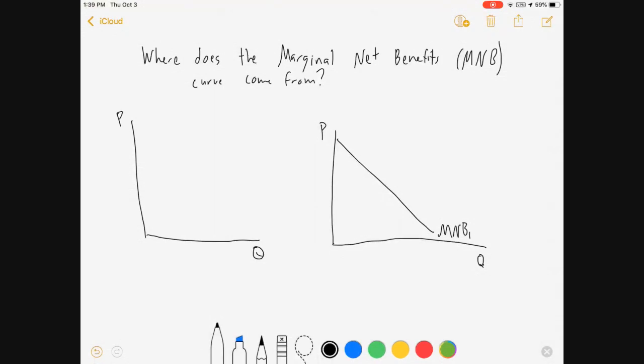But I'm gonna remind us a little bit of our supply and demand. Here's a demand curve. I'm gonna call it marginal benefits. The supply curve I'm gonna call it marginal cost.